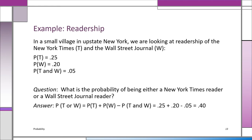Let's look at a problem. In a small village in upstate New York, we're looking at readership of two newspapers — the New York Times and the Wall Street Journal. The probability that an individual reads the New York Times, P(T), is 0.25. The probability that an individual reads the Wall Street Journal, P(W), is 0.20. Those events are not mutually exclusive — some people could read both. The joint probability of reading both, P(T and W), is 0.05, so we know there is an overlap.